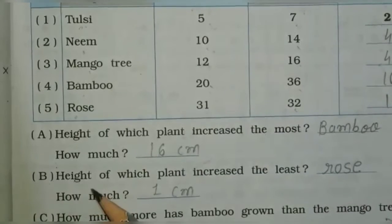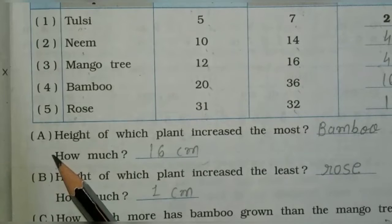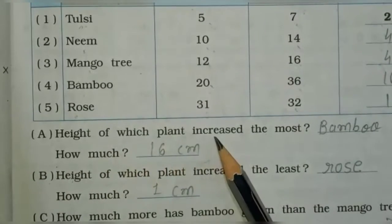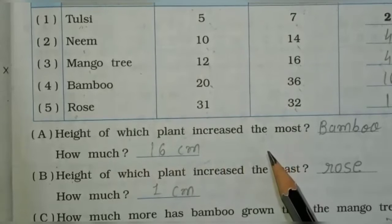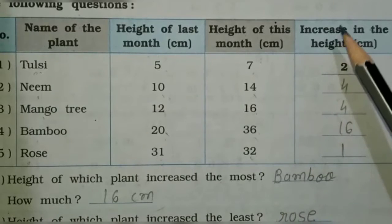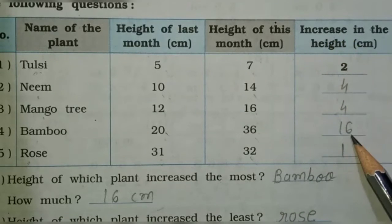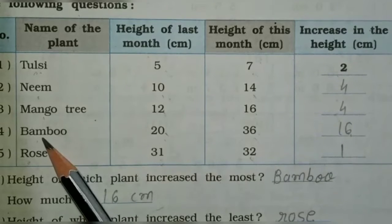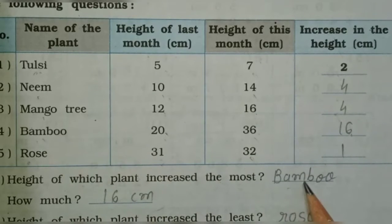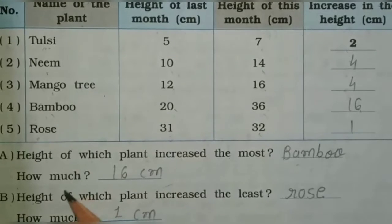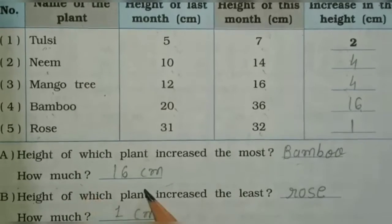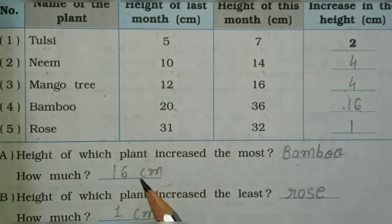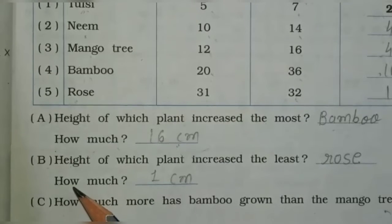Question answer A: Height of which plant increased the most? The most increased is 16, so bamboo. Write the answer here: bamboo, and how much? 16 centimeters.